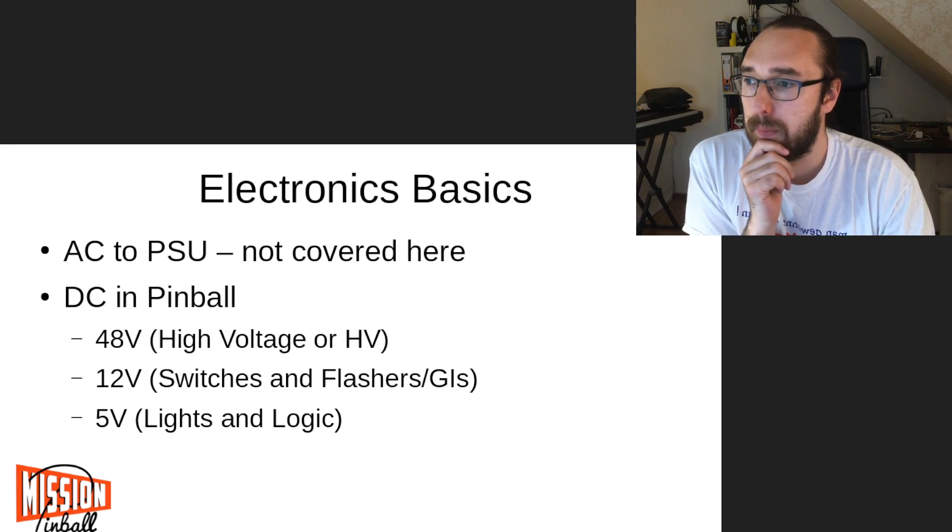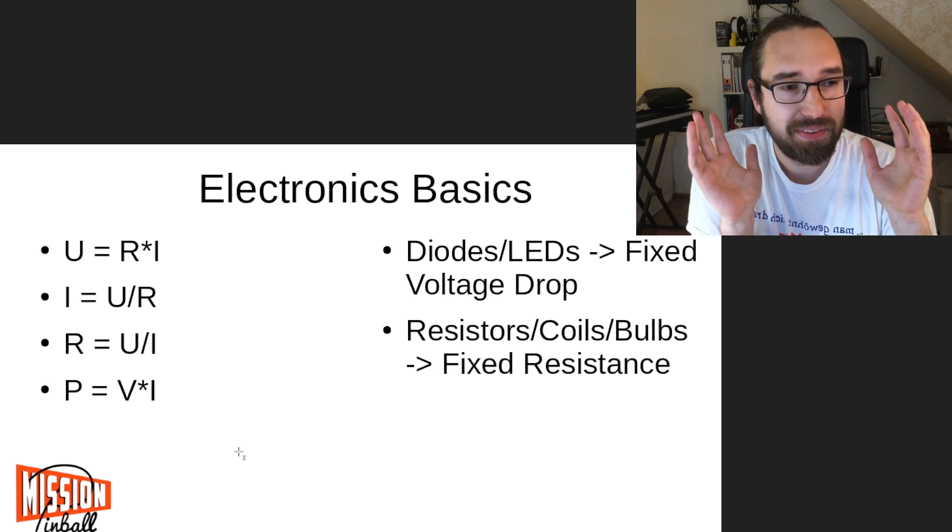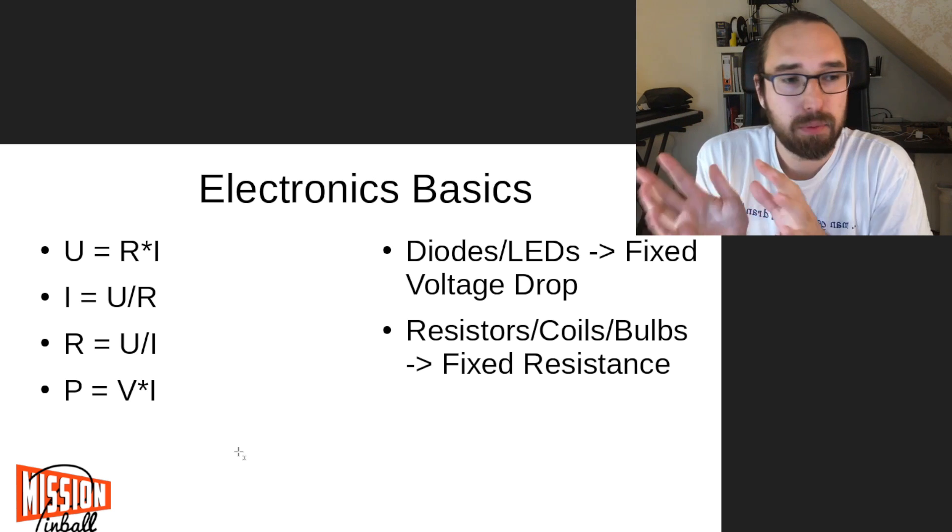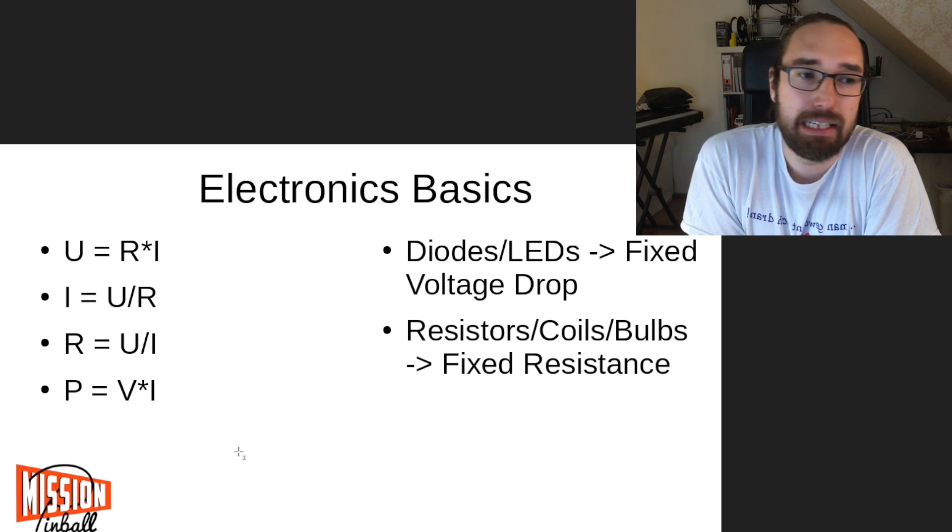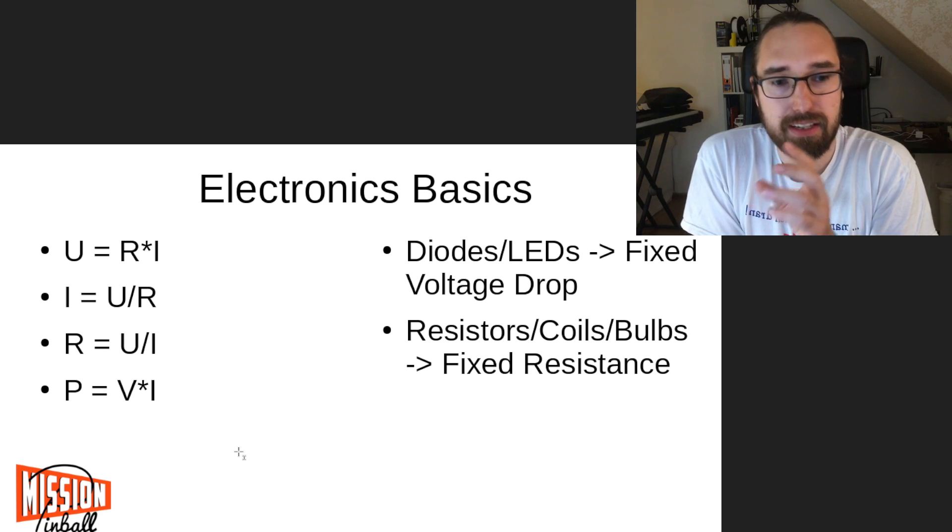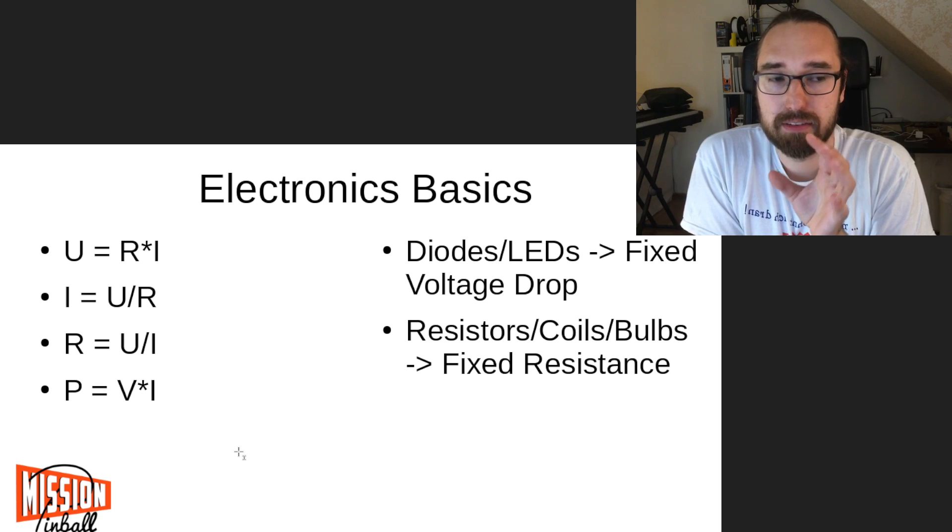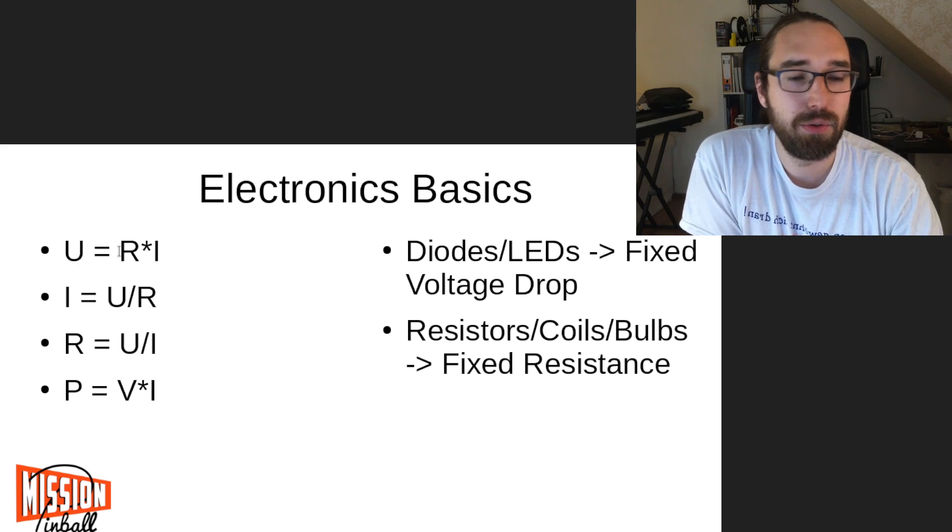Now we go into the real interesting part, and that's one of the few slides with formulas, but these are important. There is U, which is the voltage; R, which is the resistance; and I, which is the current. That's important - you need to know that. It's like URI - you need to know that the voltage is the resistance multiplied by the current, and we will have examples in a second.